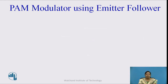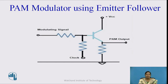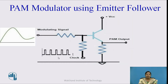Now we will see in detail the PAM modulator circuit using emitter follower. This is the circuit diagram for the emitter follower PAM modulator circuit. In this circuit, a transistor circuit is used. The input is given to the base of the transistor — this input signal is a continuous time signal, which we call the modulating signal. The other input to the base of the transistor is a train of pulses, which is the clock signal. The clock frequency is the sampling frequency, and the output of this circuit is taken across the emitter.